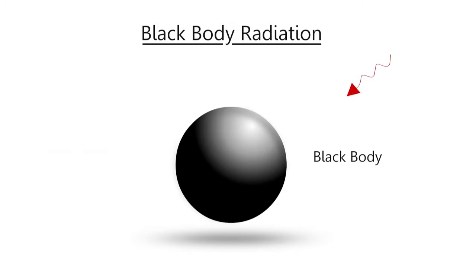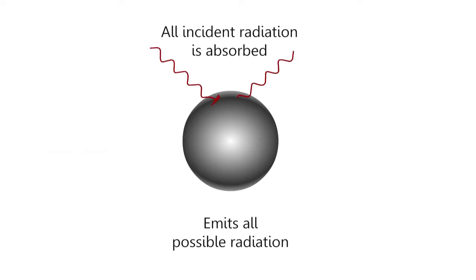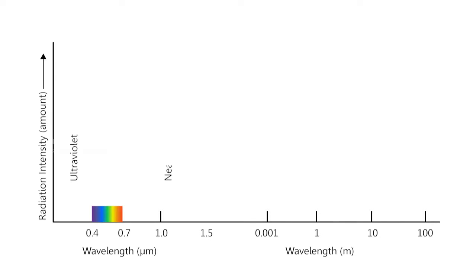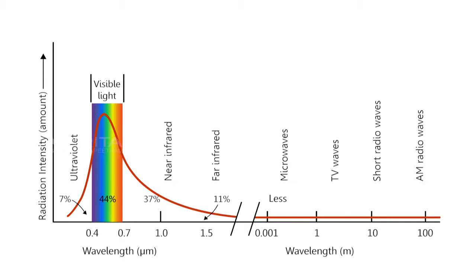A black body exhibits following features: it emits more radiation energy than the real one at a specified temperature and wavelength, absorbs all incident radiation regardless of wavelength and direction, and emits radiation energy uniformly in all directions.